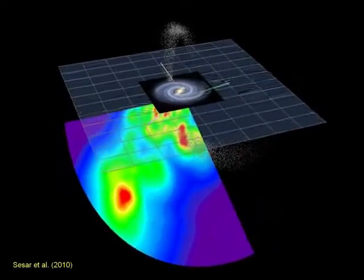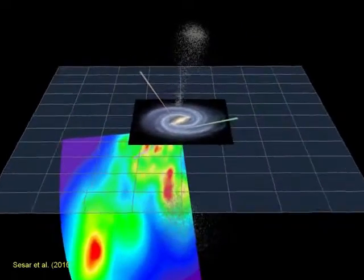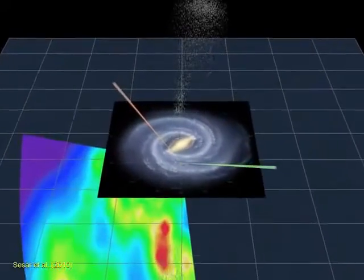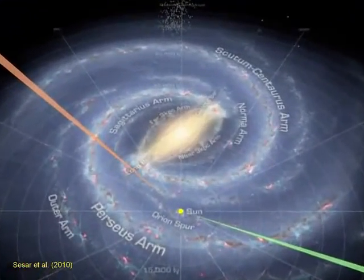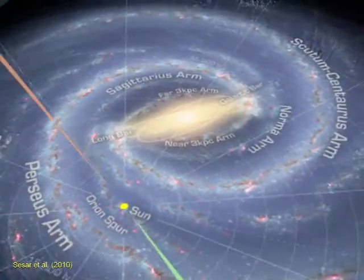The Sloan Digital Sky Survey, SDSS, has vividly demonstrated the abundance of substructure in the Milky Way halo. The colored plane shows the distribution of auroral stars from SDSS in a 300 square degree region along the celestial equator.